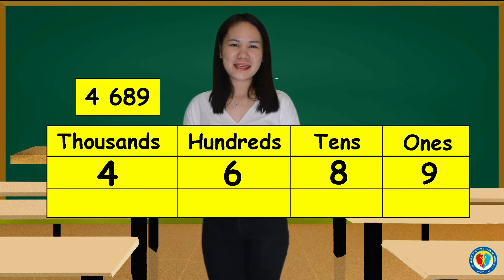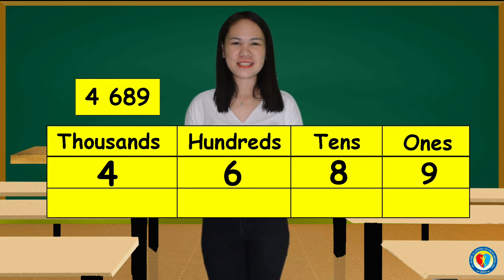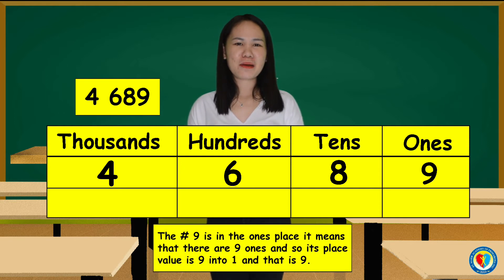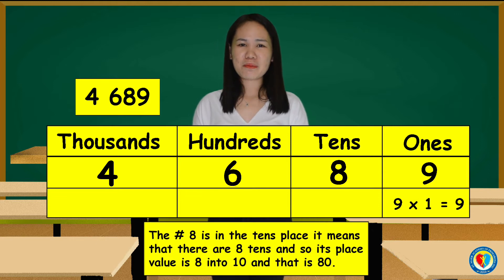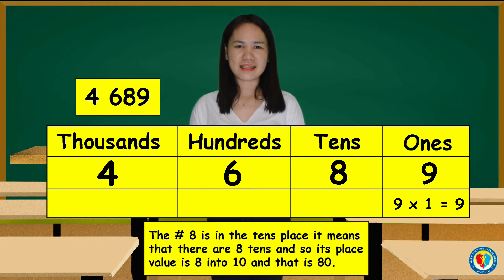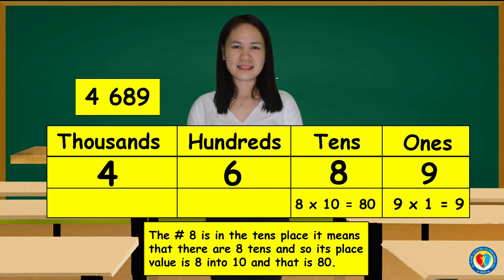Now, let us take a look at the place value of each digit. The number 9 is in the ones place. It means that there are 9 ones. And so, its place value is 9 into 1, and that is 9. The number 8 is in the tens place. It means that there are 8 tens. And so, its place value is 8 into 10.